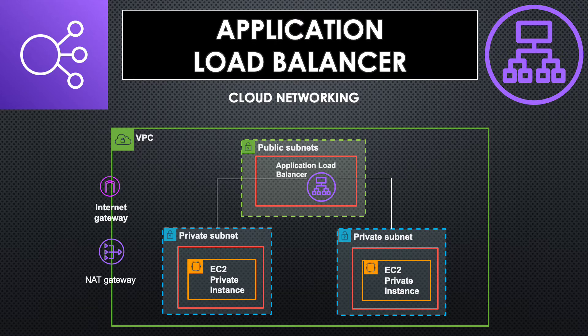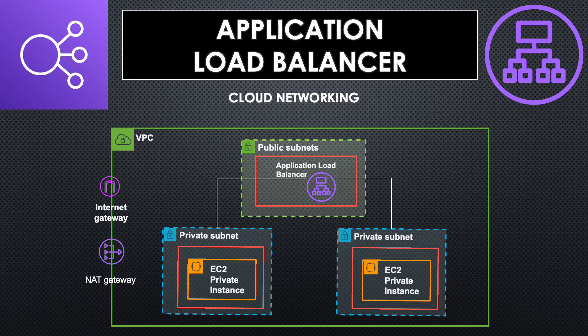Today's focus is only on application load balancers. This is the model that we are going to build. We are going to start with a VPC, which has the internet gateway and NAT gateway attached to allow internet access, and then two public subnets where we will create the application load balancers, which will then distribute the traffic between two EC2 instances that are in private subnets.